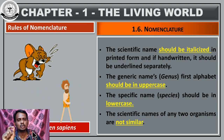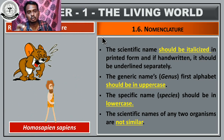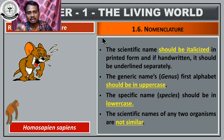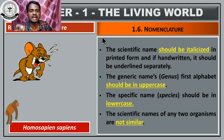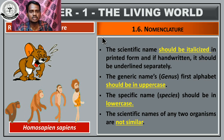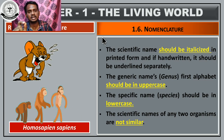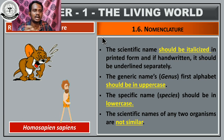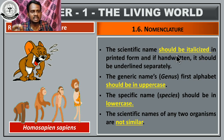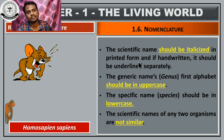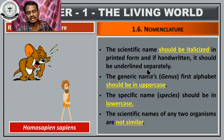What are the basic rules that are followed when assigning the name to organisms? What are the characteristic features that should be followed during the naming of organisms? The scientific naming should be italicized in printed form, and when handwritten it should be underlined separately.